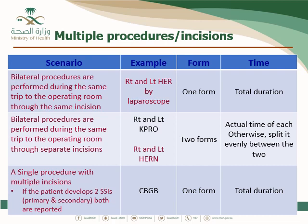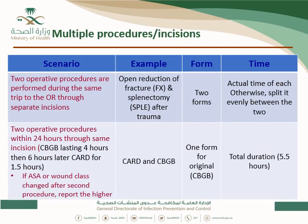If a single procedure has multiple incisions and the patient develops SSI in both primary and secondary sites — for example, deep SSI in the primary chest incision and superficial SSI in the secondary leg incision in CABG both — report both. This is one of the only examples where two SSIs in the same patient and same surgery are reported. For two operative procedures performed during the same trip through separate incisions — such as open reduction of fracture and splenectomy — fill two forms and two incisions. If difficult to calculate the time for each surgery separately, combine both and divide by two.